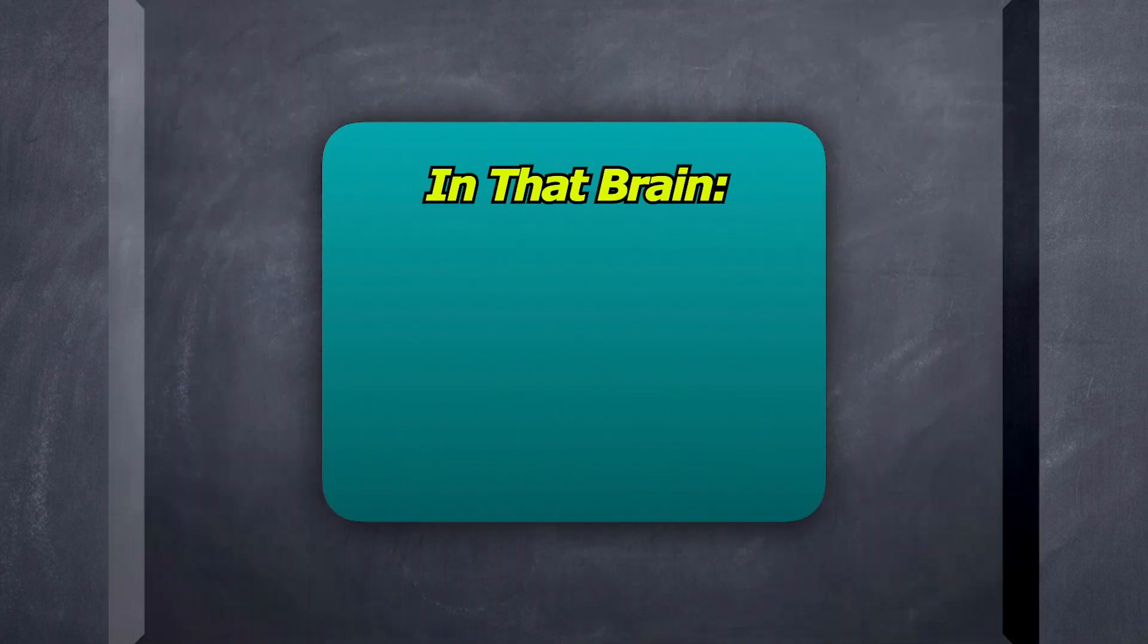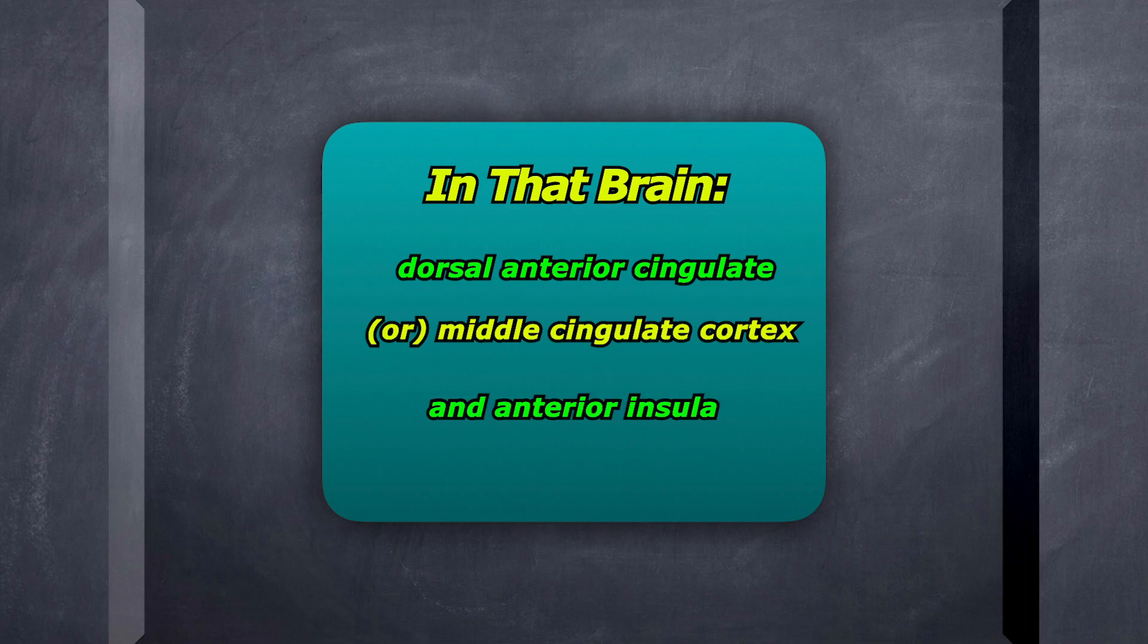The brain areas involved were the dorsal anterior cingulate cortex, the middle cingulate cortex, and the anterior insula.